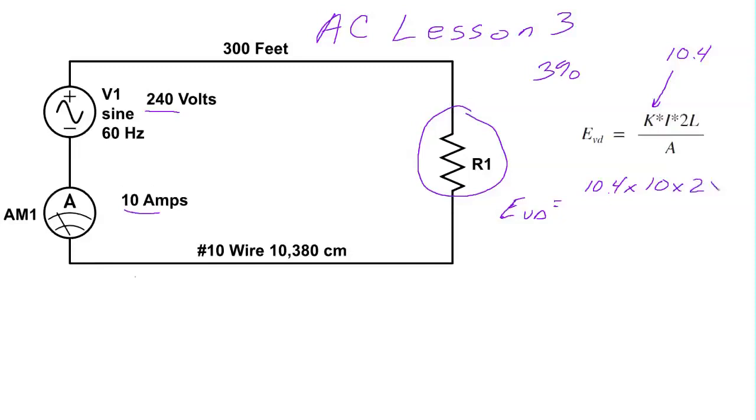We need to multiply by 2 because the load is 300 feet away, but that's just the length of one wire. So we need to multiply by 2 to get the length of both wires. So 2 times 300. We're going to put all that over 10,380, which is the circular mil area of number 10 wire.